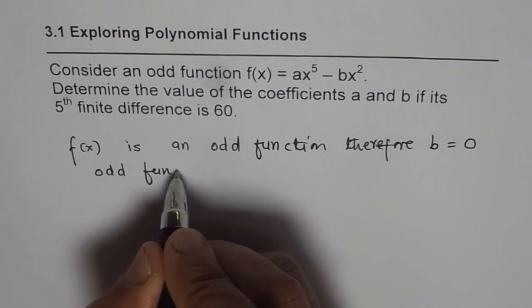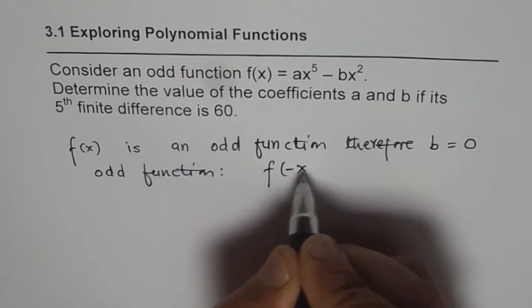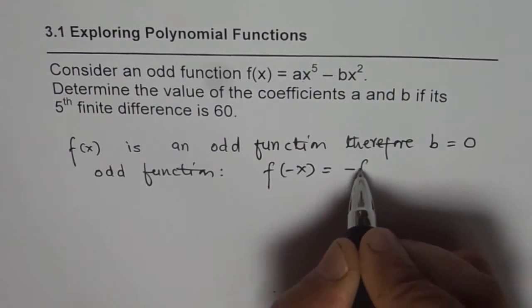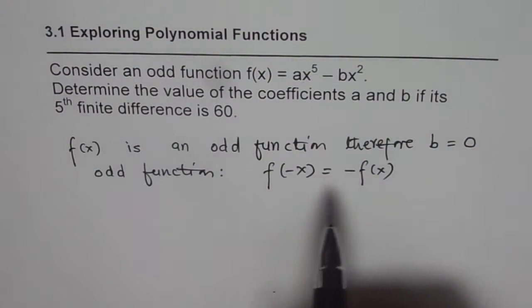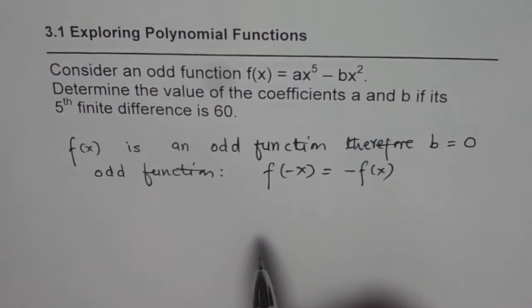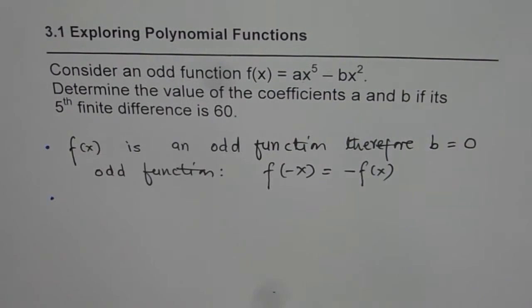Odd function means f(-x) = -f(x). So if b is not 0, then this will not be an odd function. This is very important to recollect. You learned it before and you have to apply it now.